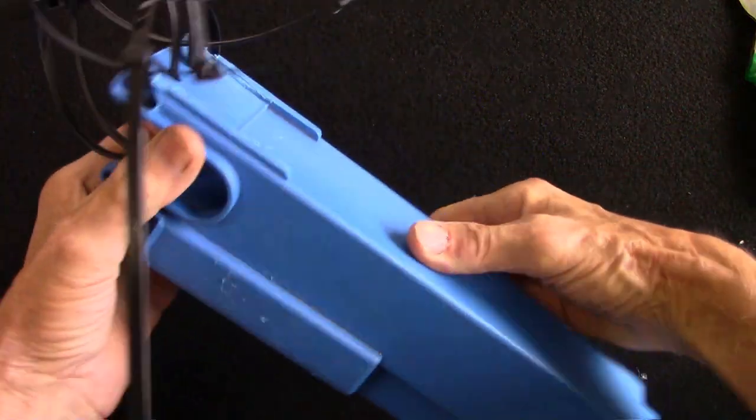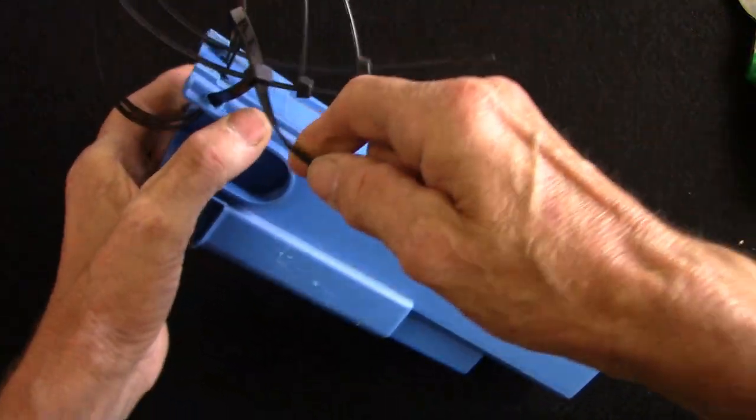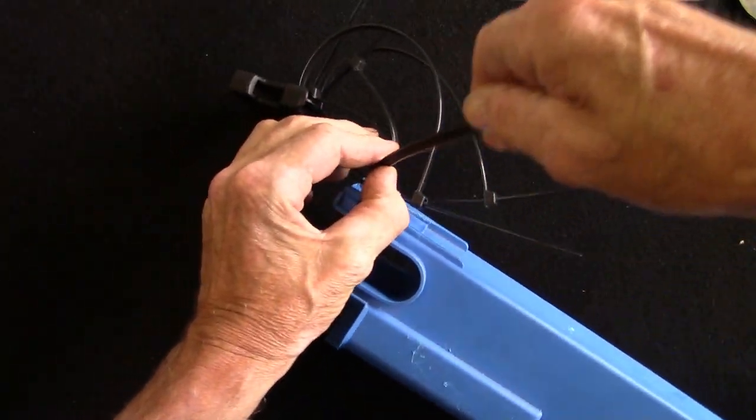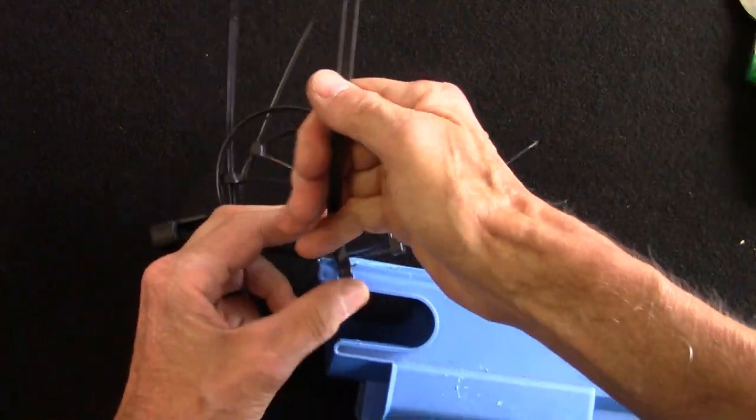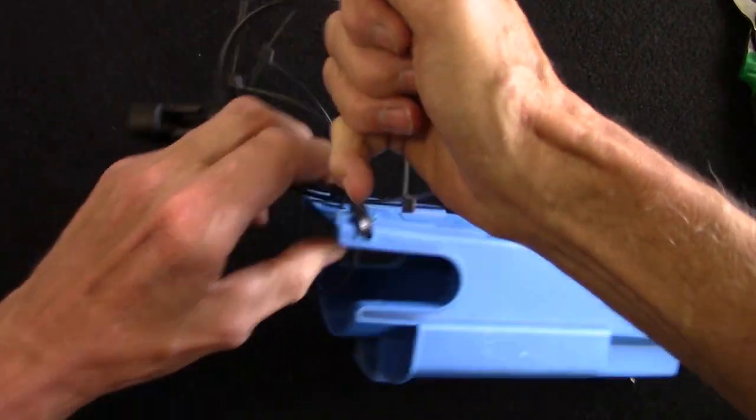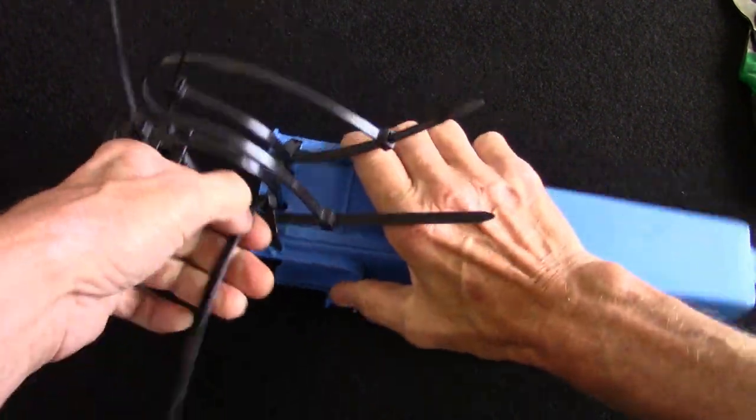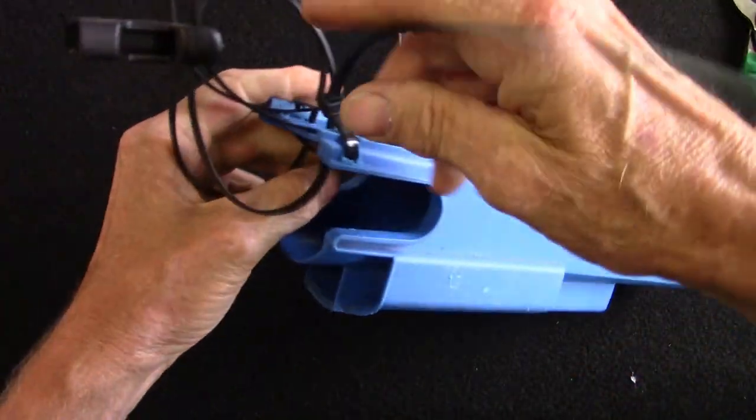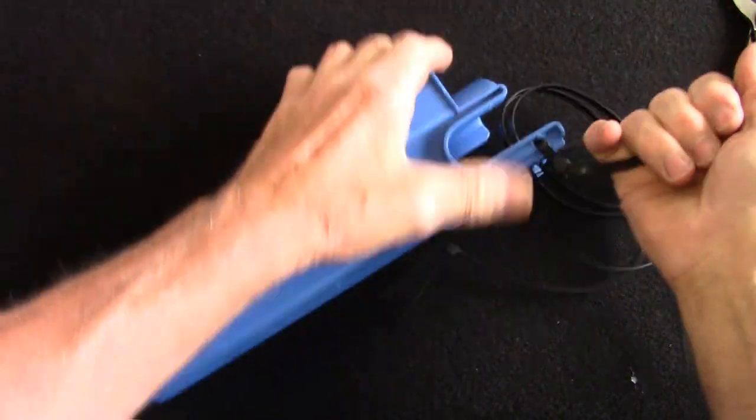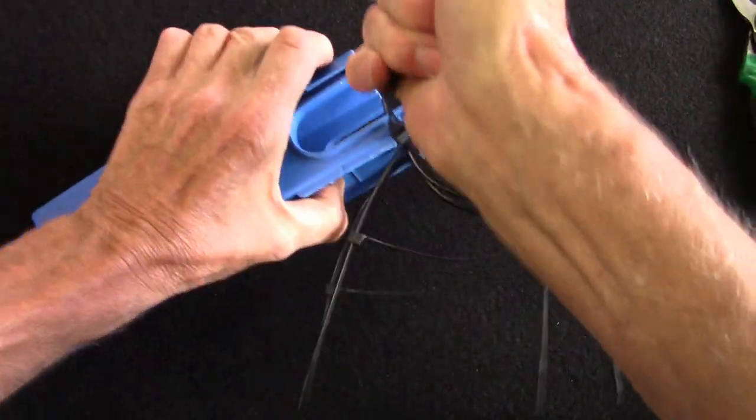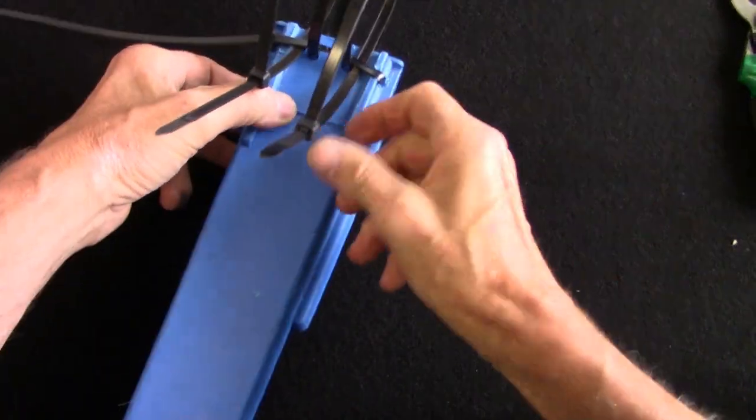So everything's ready to go. We'll start tightening these cable ties. Start tightening the first one and try to get it as tight as possible. Of course, like everything, nothing lines up. Just tighten like that, make sure that's very tight.